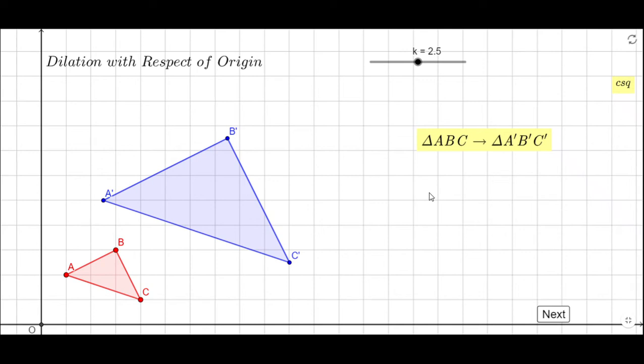Welcome or welcome back to C squared. In this clip we're going to talk about dilation with respect to origin, and you notice here we have two triangles: the red one ABC and the blue one A prime B prime C prime. A prime B prime C prime is the result of transforming triangle ABC.